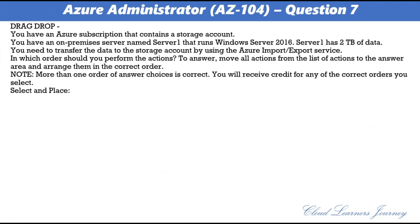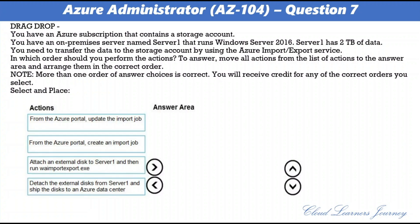Question 7. You have an Azure subscription that contains an Azure storage account. You have an on-premises server named Server1 that runs Windows Server 2016. Server1 has 2TB of data. You need to transfer the data to the storage account using the Azure Import/Export service. The correct order: first, attach an external disk to Server1 and run WAImportExport.exe. This determines the data to be imported, the number of drives needed, and the destination block location for your data in Azure storage. Use the WAImportExport tool to copy data to disk drives and encrypt the drives with BitLocker.